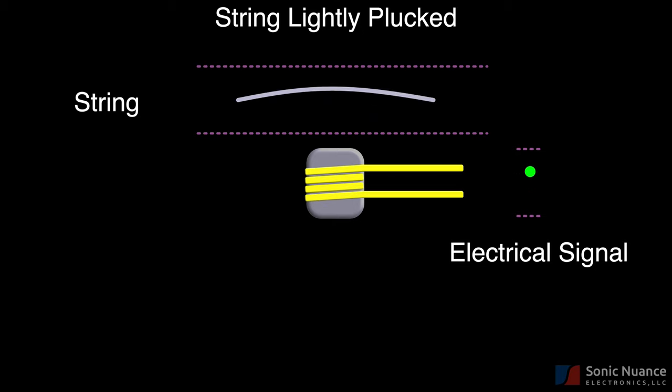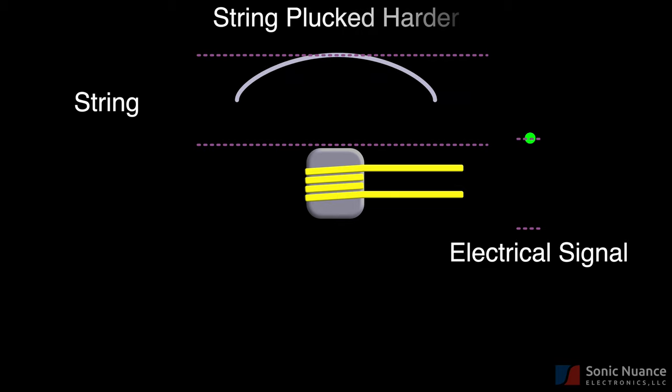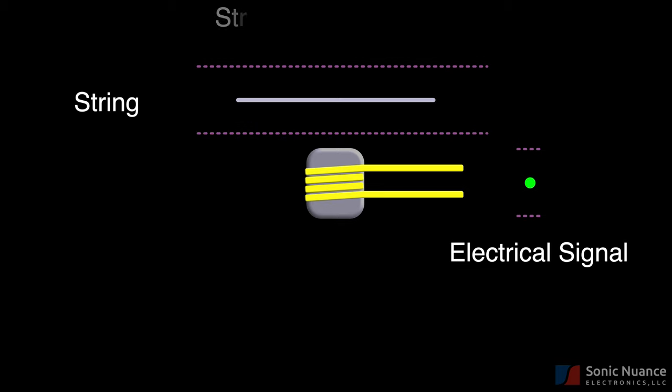Let's see how things change as we change how hard the guitar string is plucked. Here we can see both the amplitude of the string is increased, as well as the electrical signal's amplitude. To emphasize the effect, let's go back to our first case where we lightly plucked the guitar string.